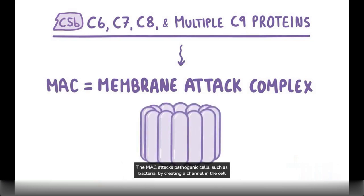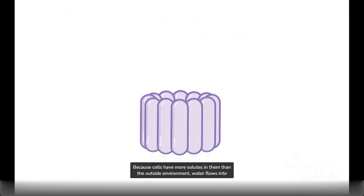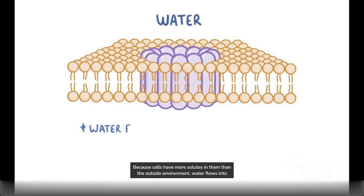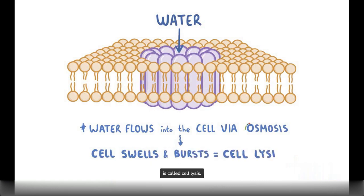The MAC attacks pathogenic cells, like bacteria, by forming a channel in the cell membrane. Because cells have more solutes in them than the outside environment, water flows into the cell by the process of osmosis. And that causes the cell to swell up and burst, which is called cell lysis.